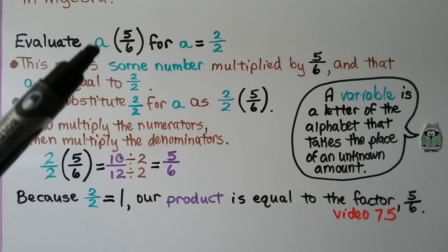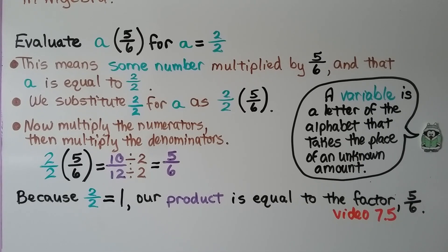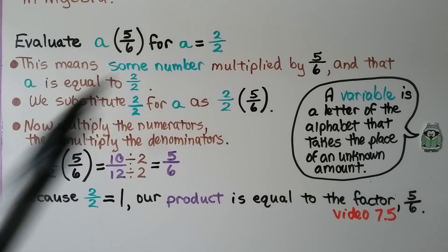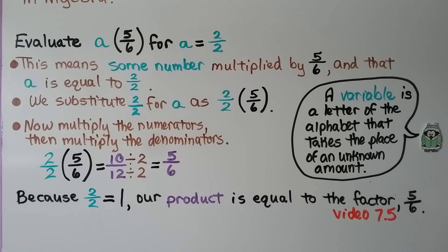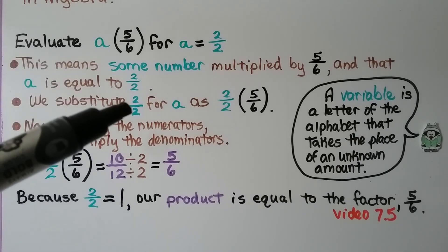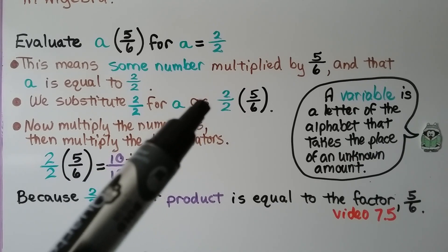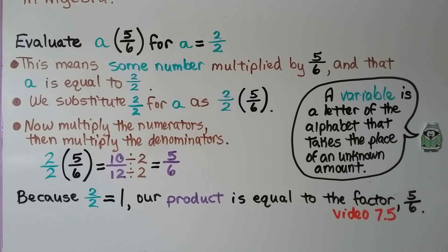We need to evaluate a times 5 sixths for a equal to 2 halves. The variable a is equal to 2 halves, so this means some number a multiplied by 5 sixths, where a equals 2 halves. We substitute — we replace a with 2 halves, giving us 2 halves times 5 sixths. Now we multiply the numerators: 2 times 5 is 10. Then multiply the denominators: 2 times 6 is 12. We get 10 twelfths. We divide by the greatest common factor, which is 2. 10 divided by 2 is 5, and 12 divided by 2 is 6, so we get 5 sixths.